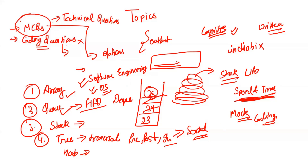Regarding the coding questions — if you go through a TCS coding question, the problem statement will be fairly lengthy and wordy. But when you see the actual code required, it's very small. They are trying to trick you with a lengthy statement so you get afraid and feel the question can't be solved. You might start giving up before even trying — but that's a trap. Always go through the complete problem and understand what it's asking, because at the end you'll realize the code was very easy. Don't judge difficulty by statement length.